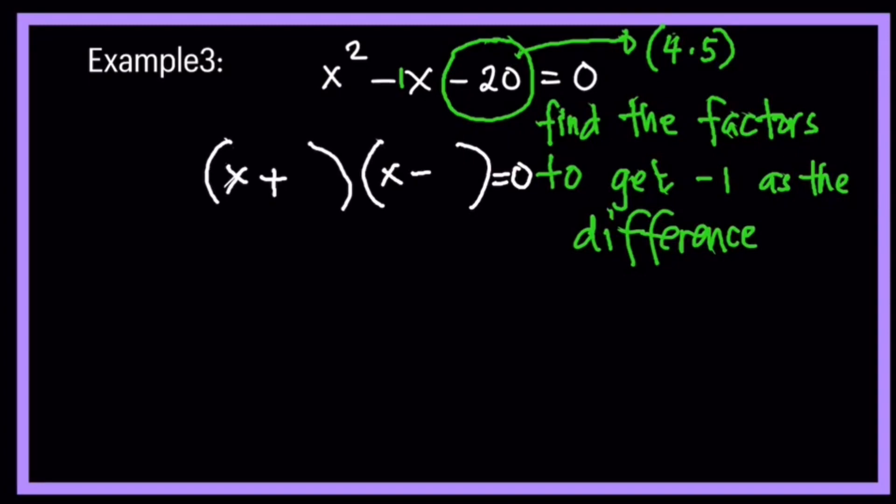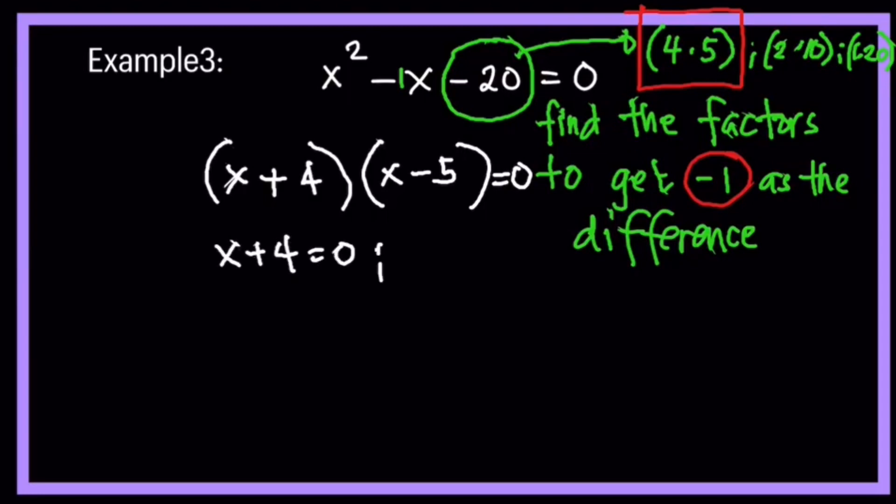Actually there are other numbers, but we are going to stick on this number right away. We also have 2 and 10, but it's not possible for us to have minus 1 here. We also have 1 and 20, 1 times 20, these are factors. But among this pair of factors, we have here 4 and 5 where we can get the difference of negative 1. So the thing is, where we can place 4 and where we can place 5. We are going to put 5 here to minus because it's negative 1. Remember, when you subtract, you are going to copy the sign of the greater number. That's why you have here minus 5.